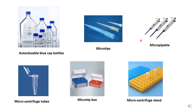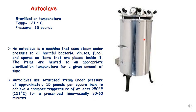Micro pipettes come in various sizes and are required for taking hormones, antibiotics, and other chemicals used in tissue culture media. There are also micro centrifuge tubes, used to prepare hormones and other chemicals. Boxes used to keep micro tips and eppendorf stands are also part of these requirements.